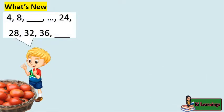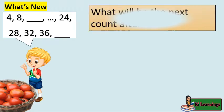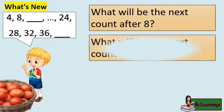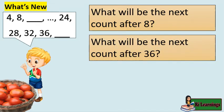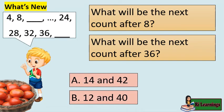As you noticed, while Teddy is counting the tomatoes, there are missing terms in his counting. What will be the next count after 8? What will be the next count after 36? It is: A) 14 and 42, or B) 12 and 40. I will give you 10 seconds to choose your answer.